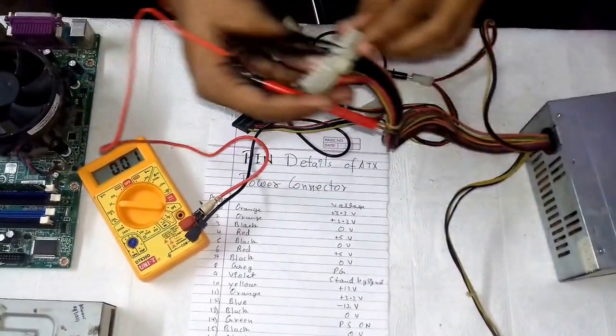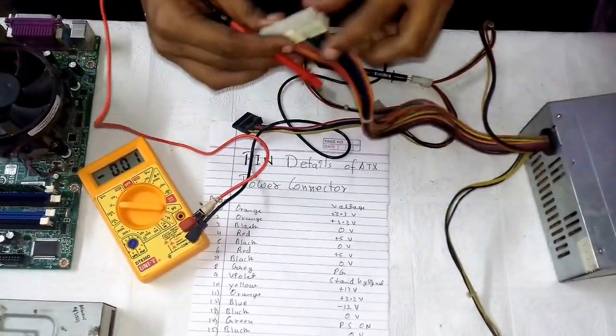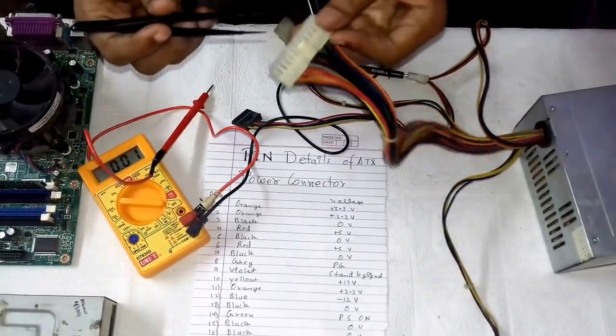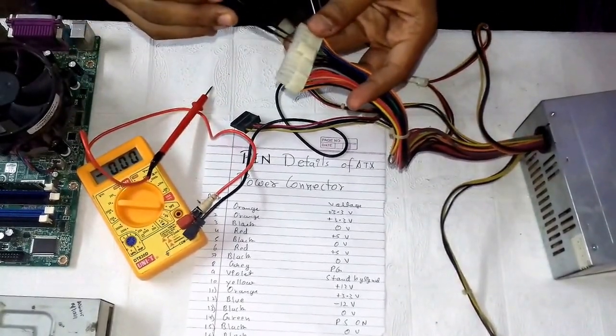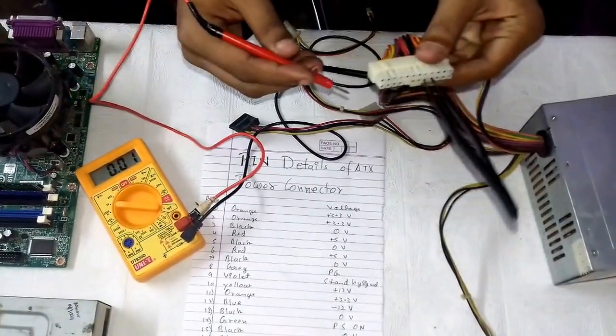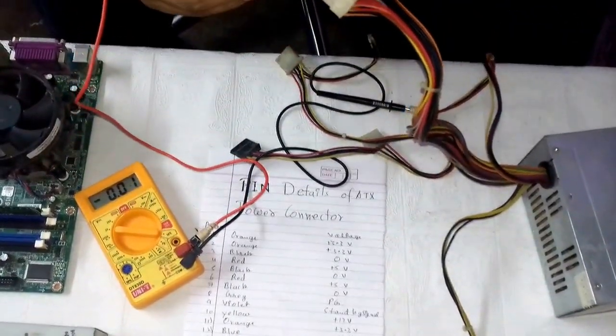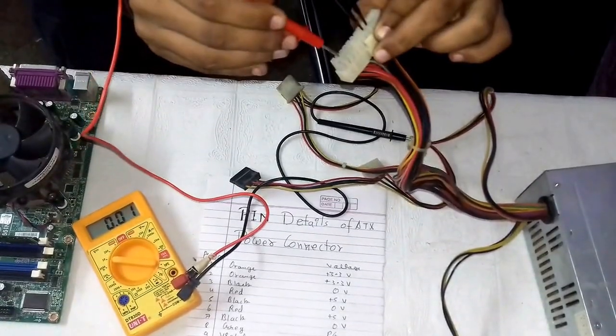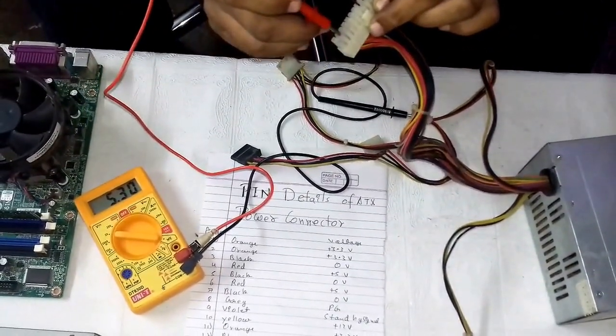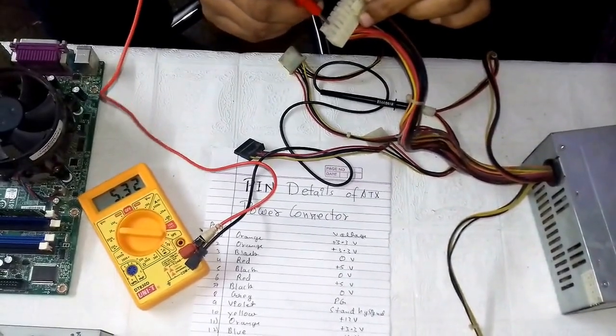Now let us check the voltage in red wire. Here is the red wire. It is showing 5.33 or 5.3. Yeah, it is in the acceptable range.